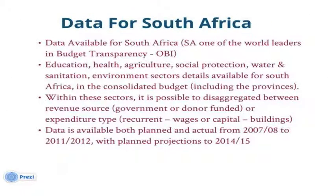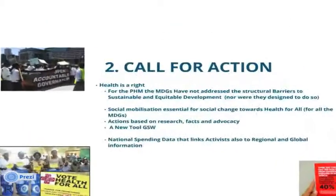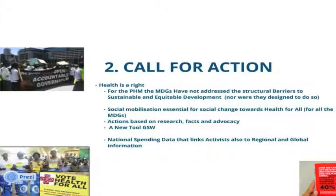South Africa is one of the world leaders in budget transparency according to the Open Budget Index. The data shows quite a bit of detail is available, including at the provincial level, and information can be disaggregated between revenue sources — government and donor — accessible in annual reports. In terms of transparency, South Africa at a national level is doing really well for activists to make the kinds of demands they need to make.